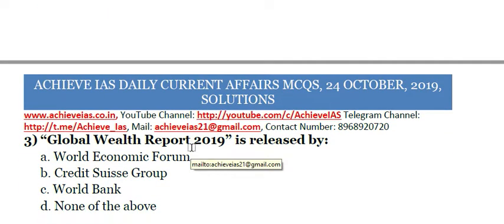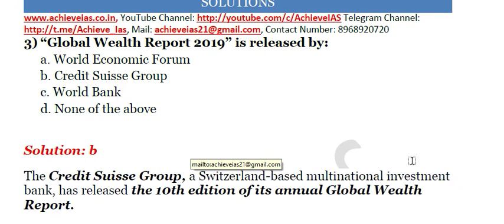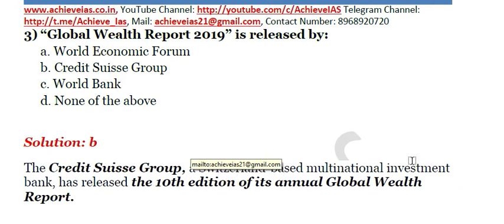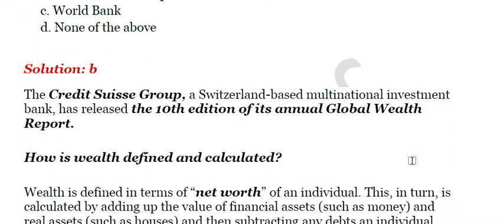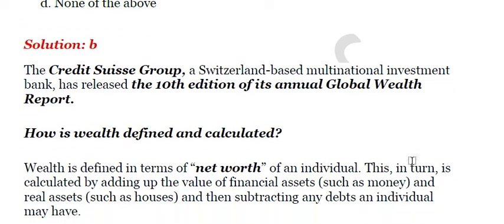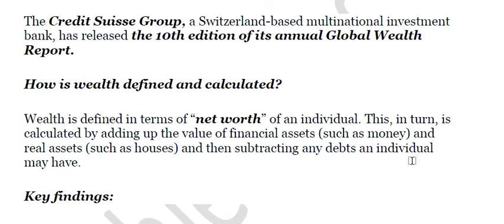The next question is: Global Wealth Report 2019 is released by A. World Economic Forum, B. Credit Suisse Group, C. World Bank, D. None of the above. The answer is B, Credit Suisse Group. This report is published annually by Credit Suisse Group and basically tells about the wealth that different countries and individuals hold. It has now released its 10th edition of its annual global wealth report.